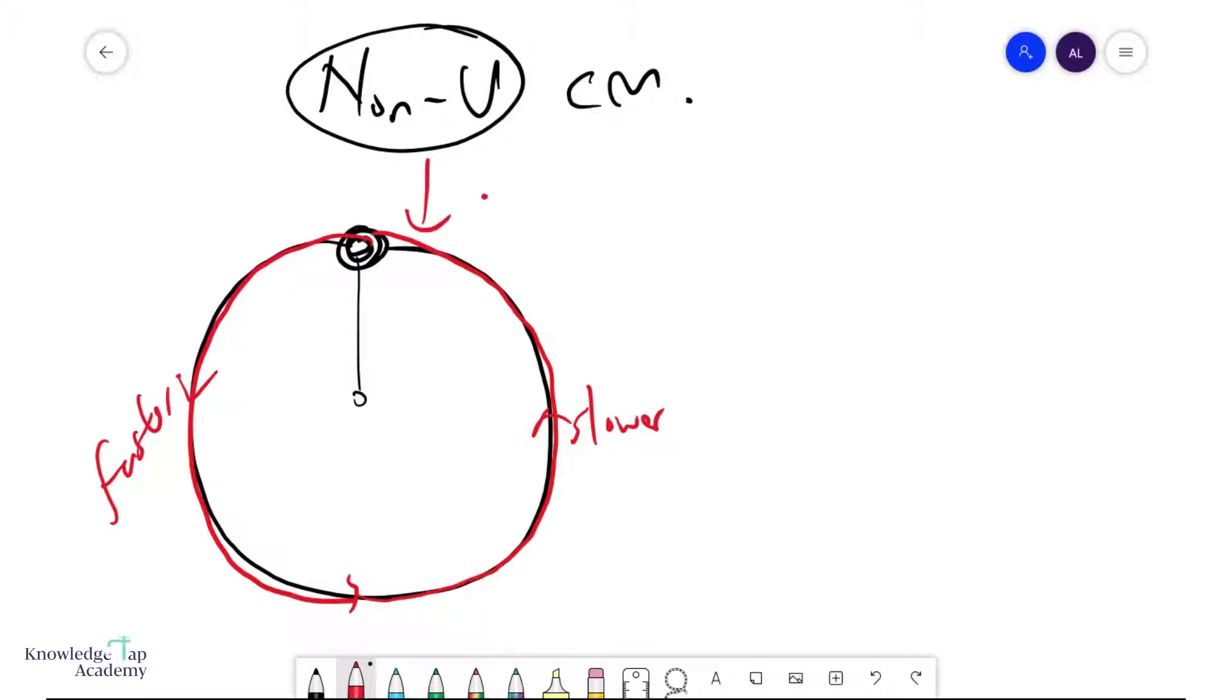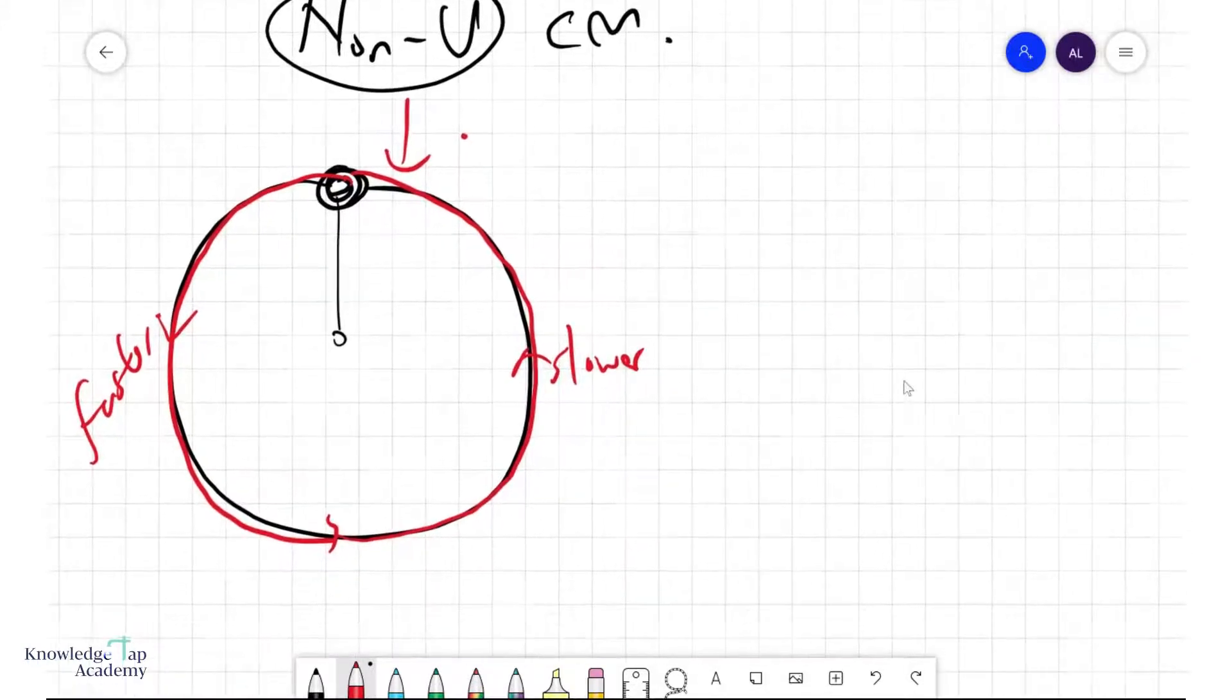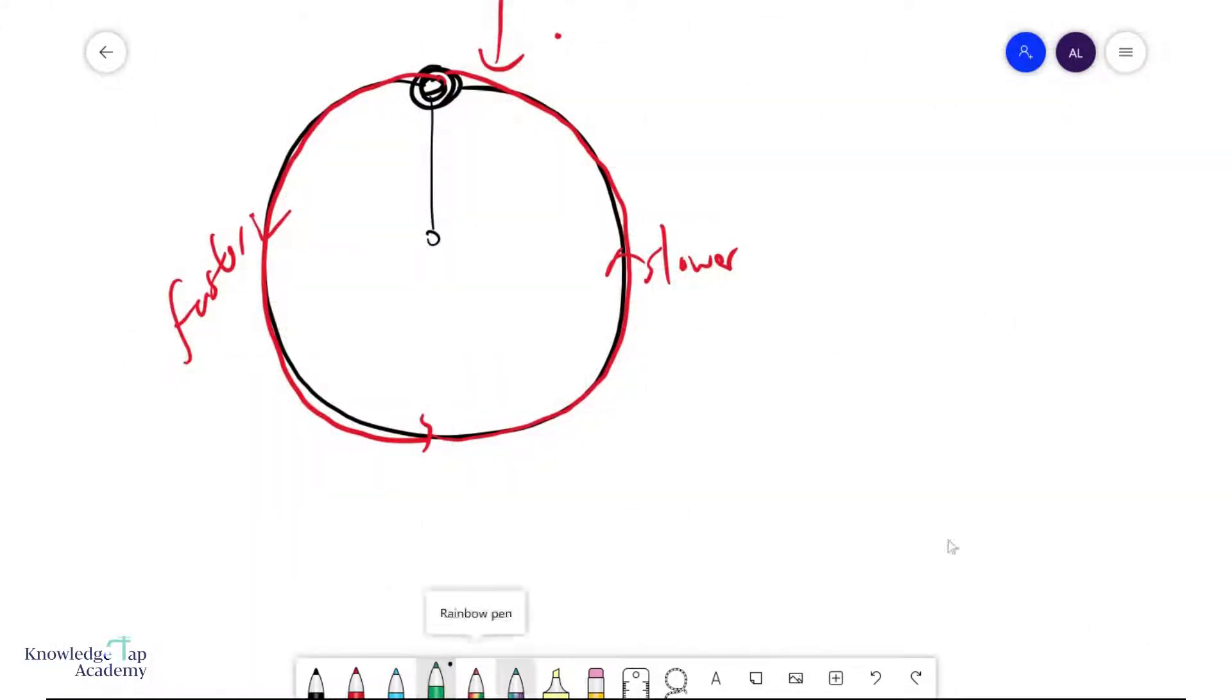But in either case, this is an example of non-uniform circular motion. So how do we then study an object that is in non-uniform circular motion? The key difference here, consider the object over here, is that if I say I have a centripetal force, that is absolutely right because you are still moving in circular motion.